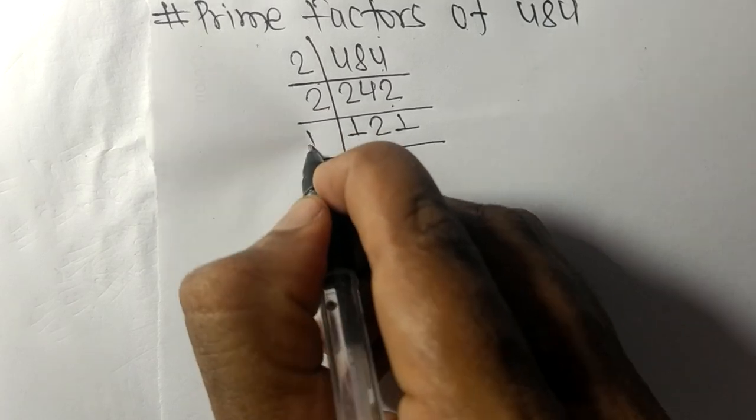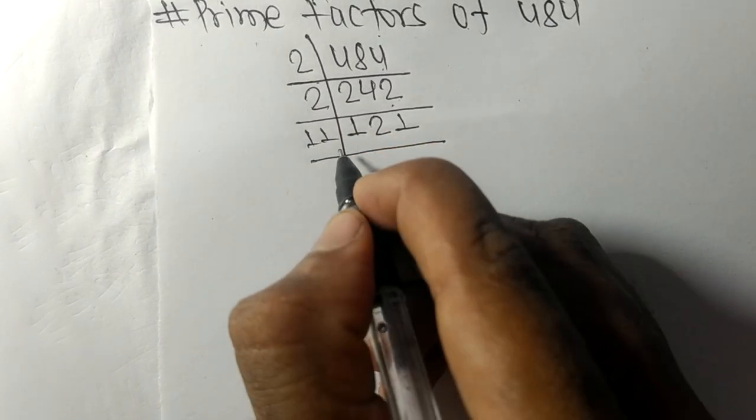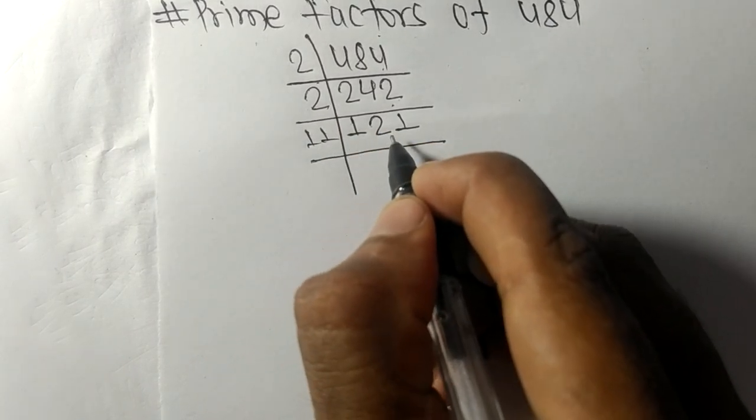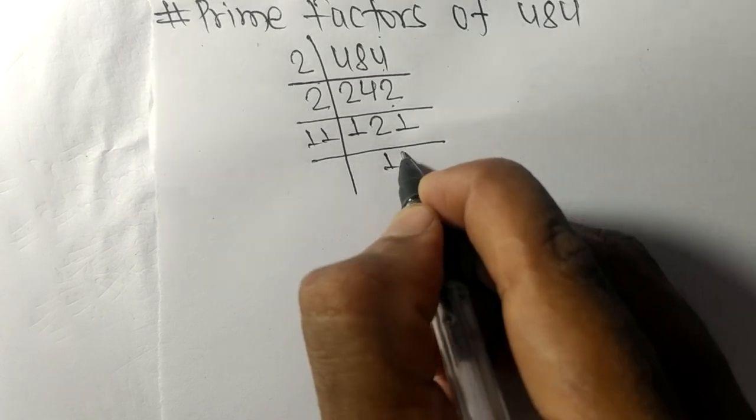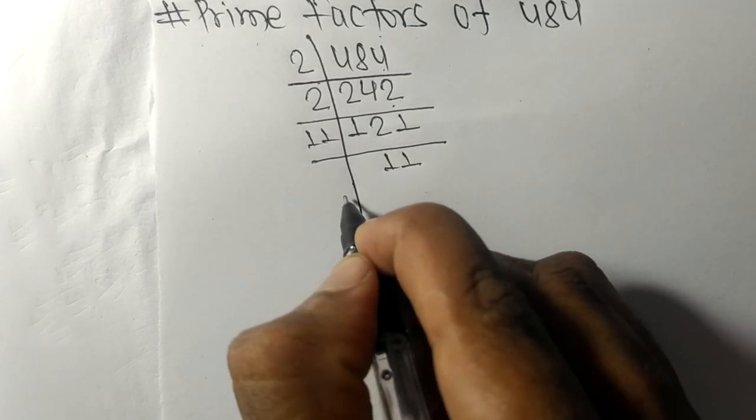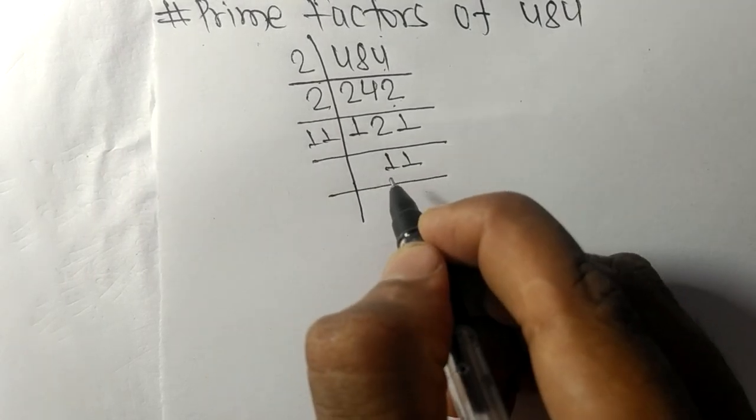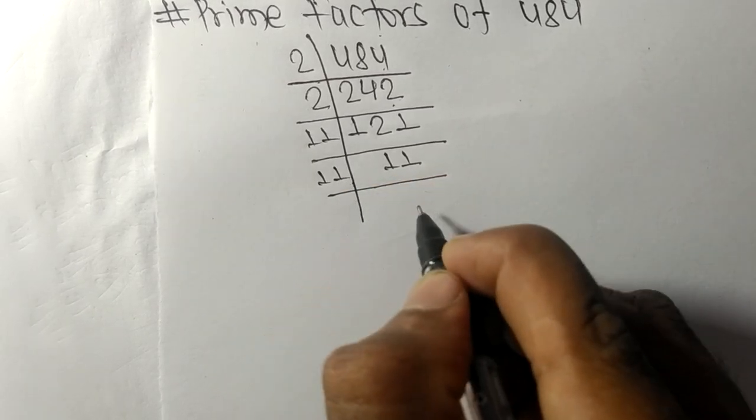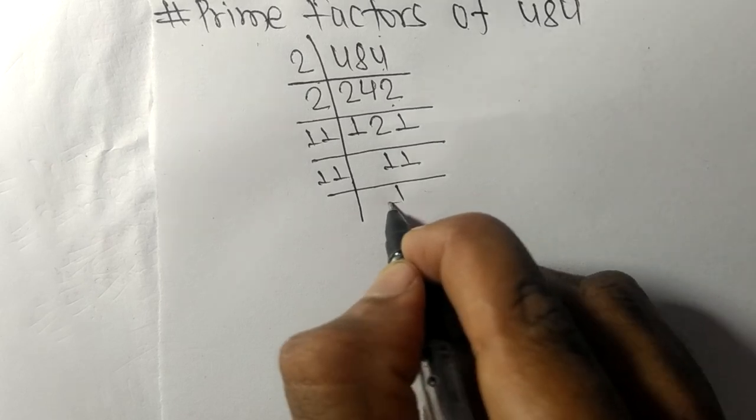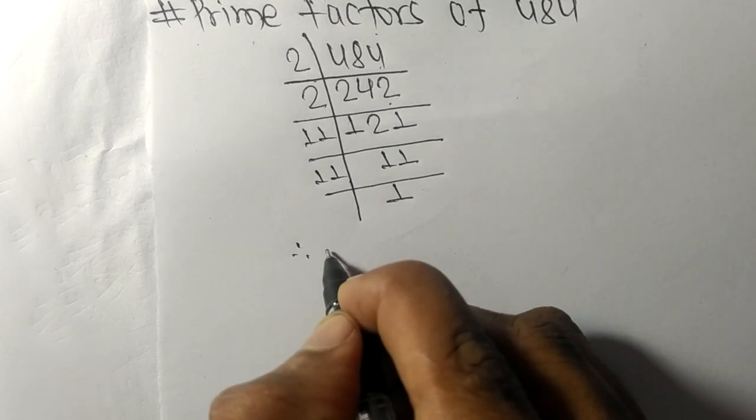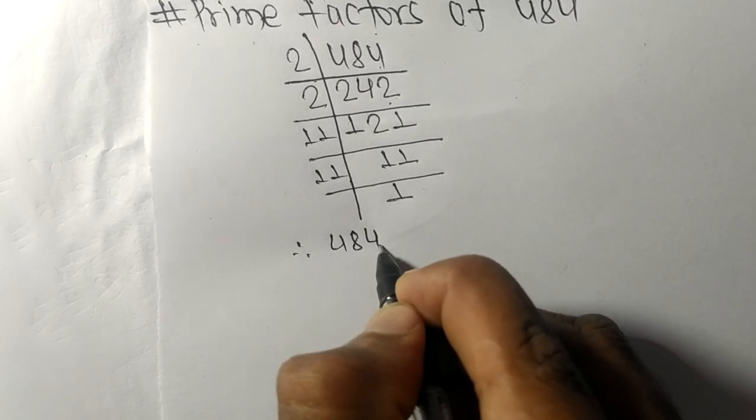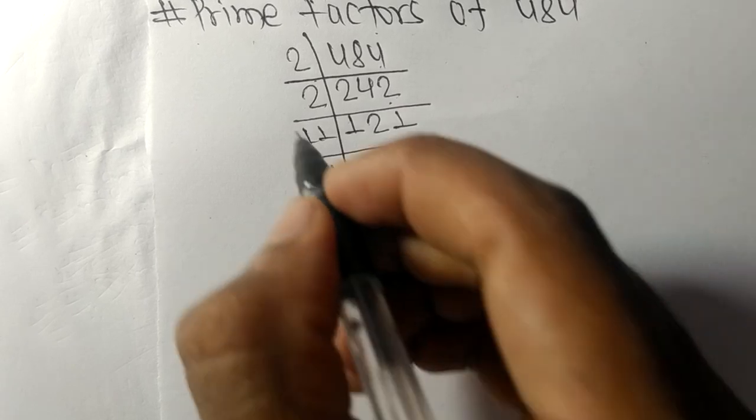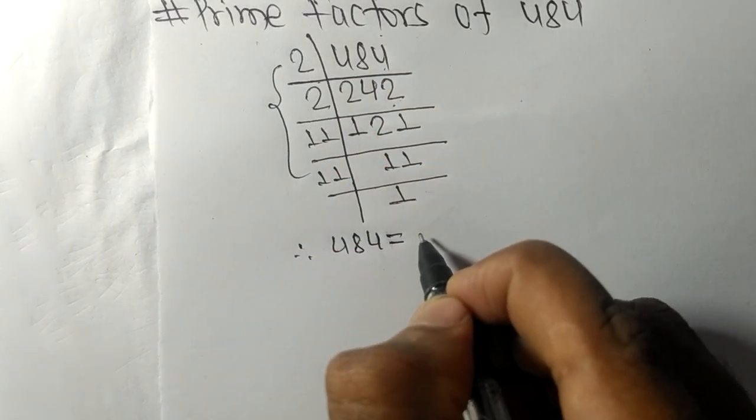So 11 dividing 121, we get 11. And now 11 is a prime number, so it is divisible by 11 itself and we get here 1.